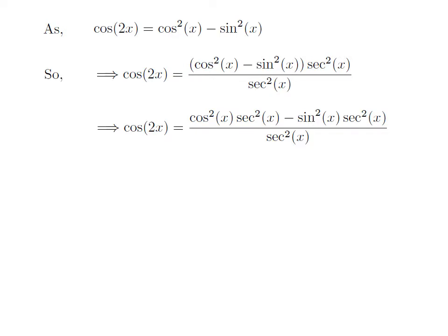Expanding the expression in the numerator, we get: cosine of 2x is equal to (square of cosine of x times square of secant of x) minus (square of sine of x times square of secant of x), all divided by square of secant of x.